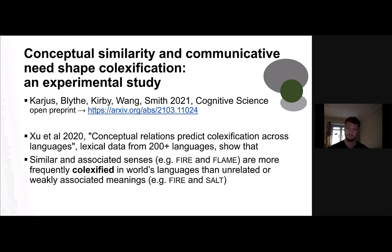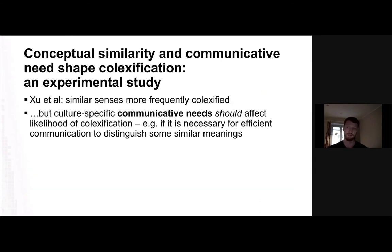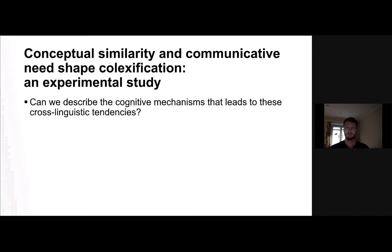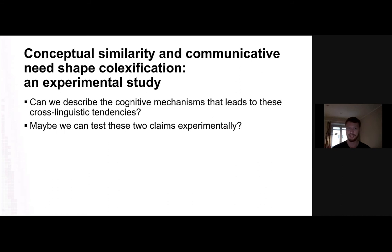That study also pointed out that culture-specific communicative needs should affect colexification. For example, if it is necessary for efficient communication to distinguish some meanings — like ice and snow in cold climates, where there is indeed a difference: in cold climates people tend to have different words, while warm climates often have a single word for ice and snow — that communicative need might block the natural drive to colexify similar meanings. So we wondered: can we describe the cognitive mechanisms that lead to these cross-linguistic tendencies? Maybe we can even test these two claims about colexification experimentally.